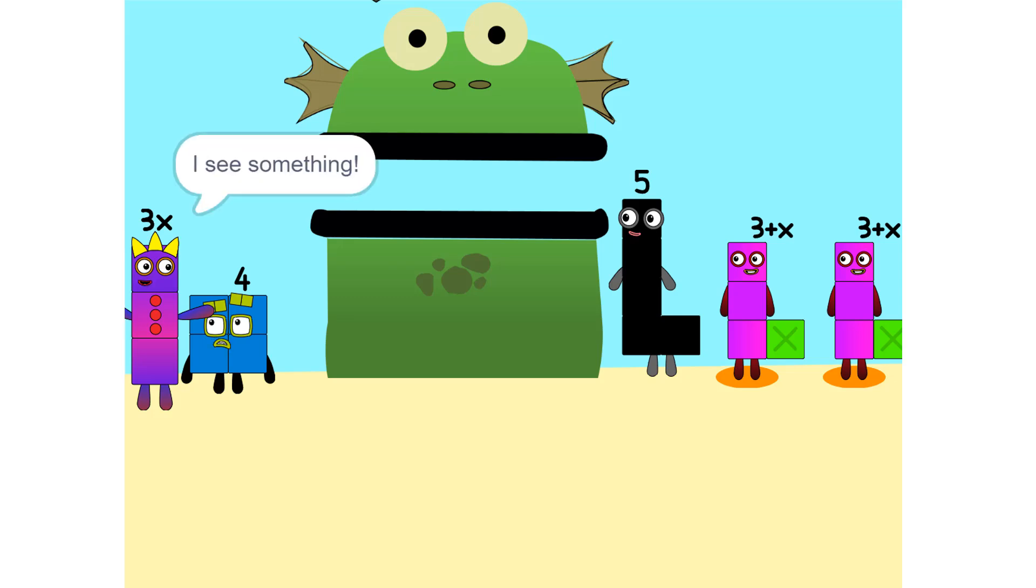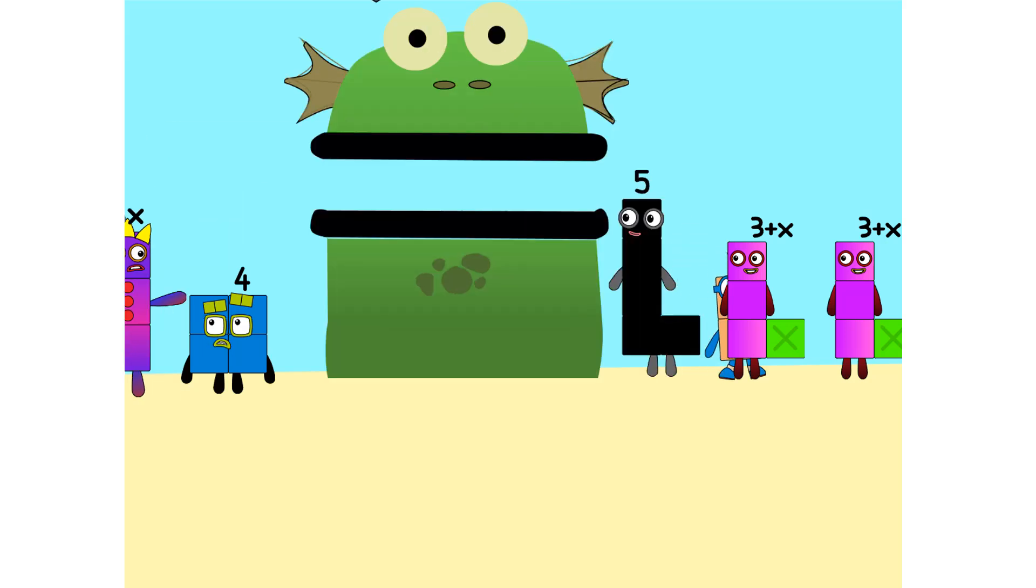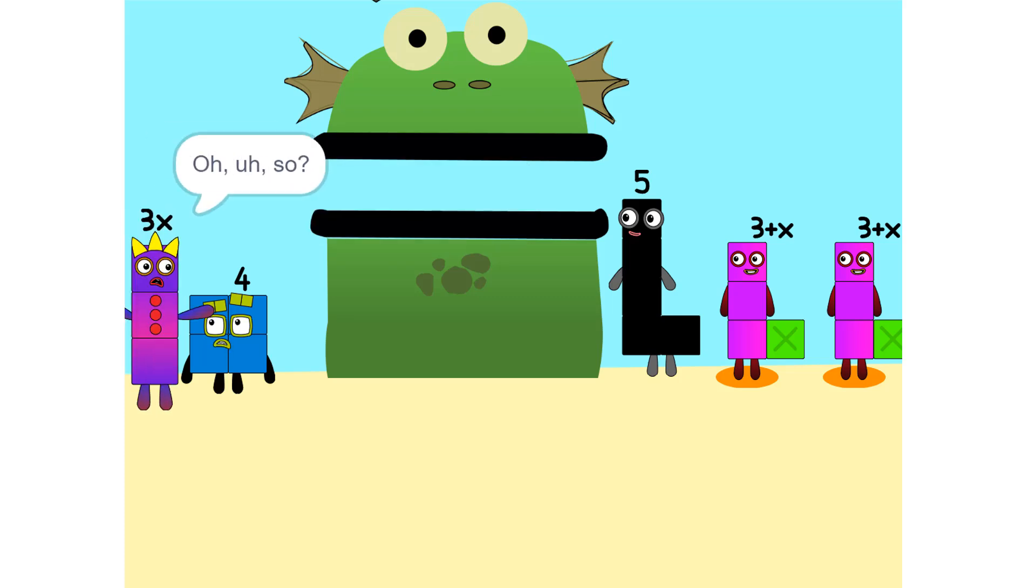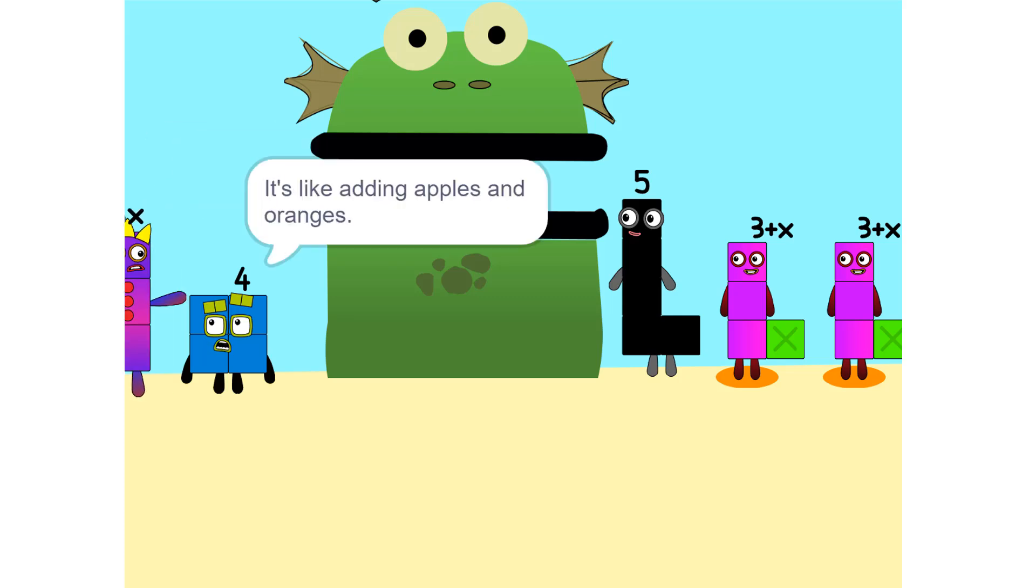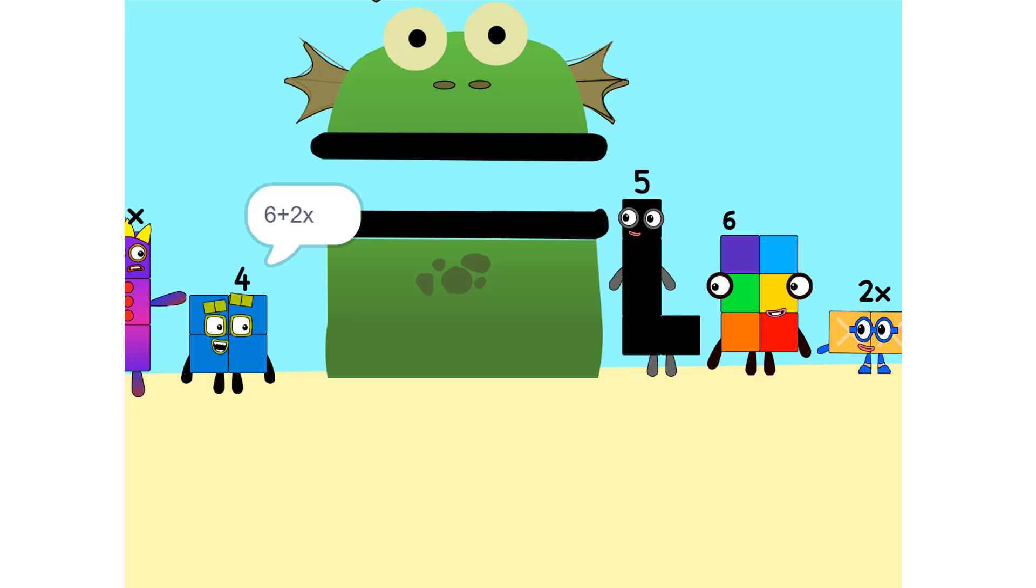I see something. We can add these. Why did that happen? Because the 2 is connected to the 3 plus X. So it's like adding apples and oranges. See the 2 times 3 plus X? That's the same as 2 times 3 plus 2 times X, which is 6 plus 2X.